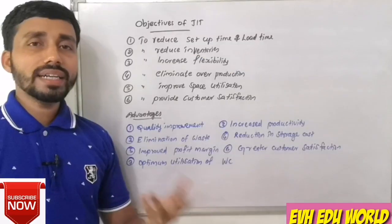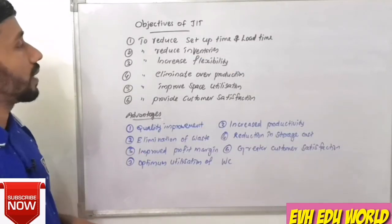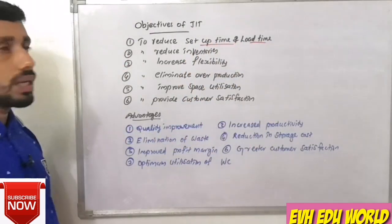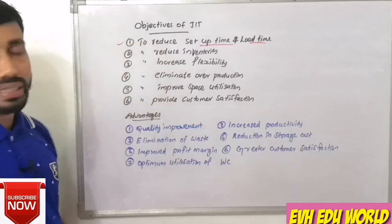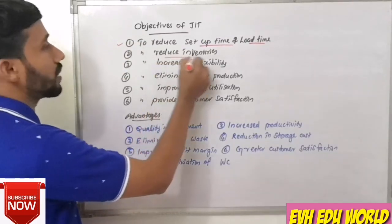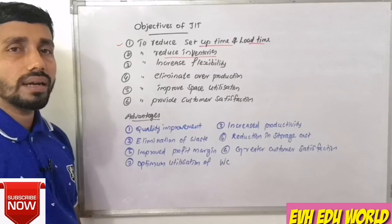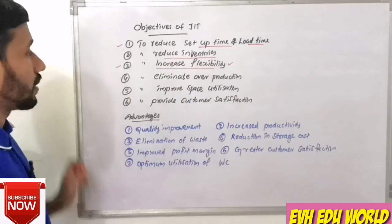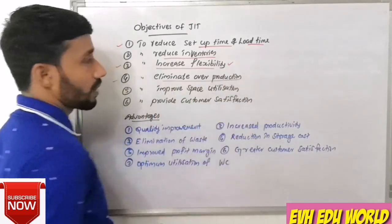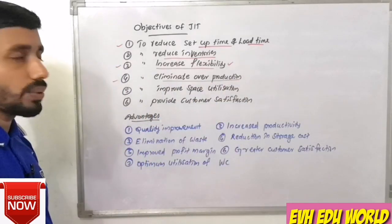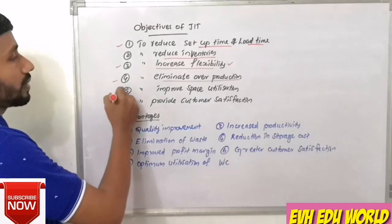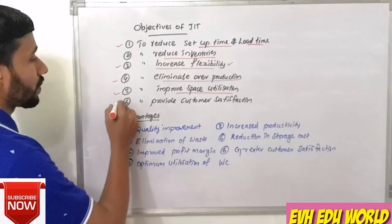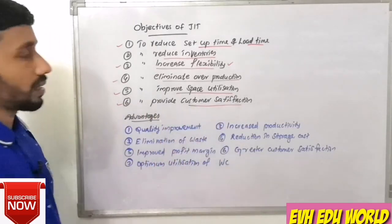The objectives of JIT are: first, to reduce setup time and lead time; second, to reduce inventories; third, to increase flexibility; fourth, to eliminate overproduction; and fifth, to improve space utilization, which in turn provides greater customer satisfaction.